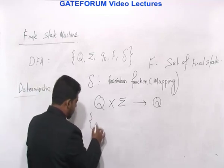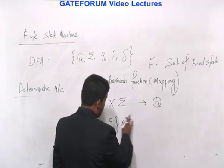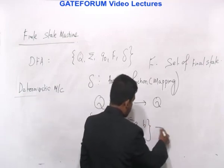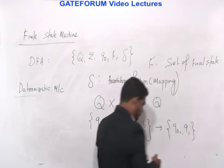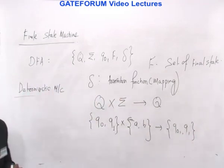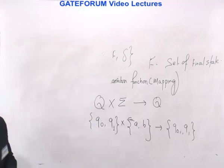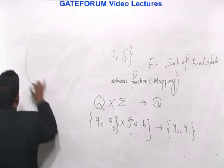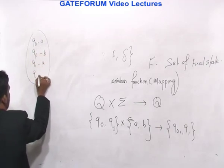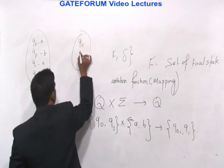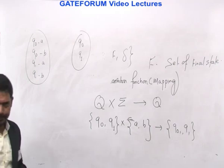Cross here is the Cartesian product. Let's take an example. Suppose Q = {Q0, Q1} and sigma = {A, B}. Then the codomain is also {Q0, Q1}. The domain is: Q0 on A, Q0 on B, Q1 on A, and Q1 on B. The codomain side has only Q0 and Q1. Now you define delta — a random mapping following the two conditions: no two images and there must be one image.